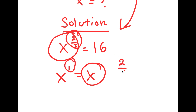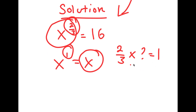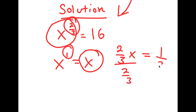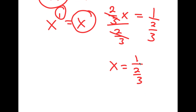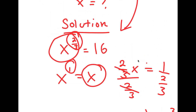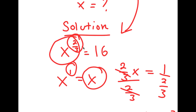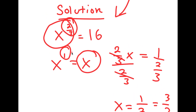So 2 over 3 times what is equal to 1? We can think of this as an algebraic equation: 2 over 3 times x is equal to 1. To solve this, I'm going to divide both sides by 2 over 3, so I get x is equal to 1 over 2 over 3. And 1 over any number is the reciprocal of that number, so the reciprocal of 2 over 3 is 3 over 2. So we have to multiply 2 over 3 by 3 over 2 to make it equal to 1.